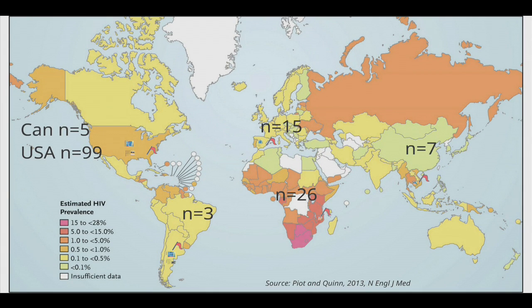In terms of where the papers geographically come from, not surprisingly we had nearly 100 from the USA, then five from Canada, only three in Latin America, 15 in Europe, 17 in Asia, and 26 in Africa. Those published in Africa — most of them, more than half — were published in the last year.